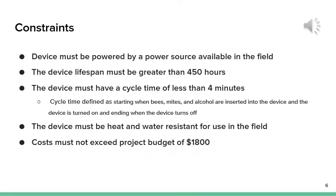Some constraints to this project are that the device must be powered by a power source available in the field, the device must have a lifespan greater than 450 hours, must have a cycle time of less than 4 minutes, where cycle time is defined as starting when the bees, mites, and alcohol have been inserted and ending when the device turns off. The device must also be heat and water resistant for use in the field, and the total cost must not exceed the budget of $1,800.